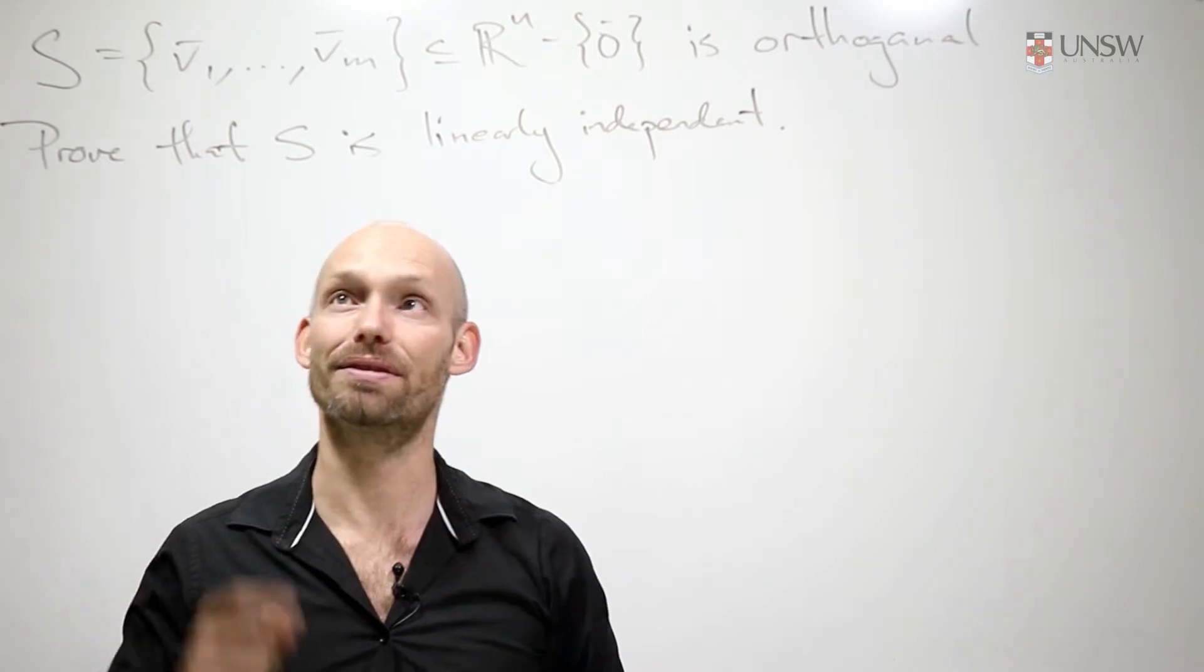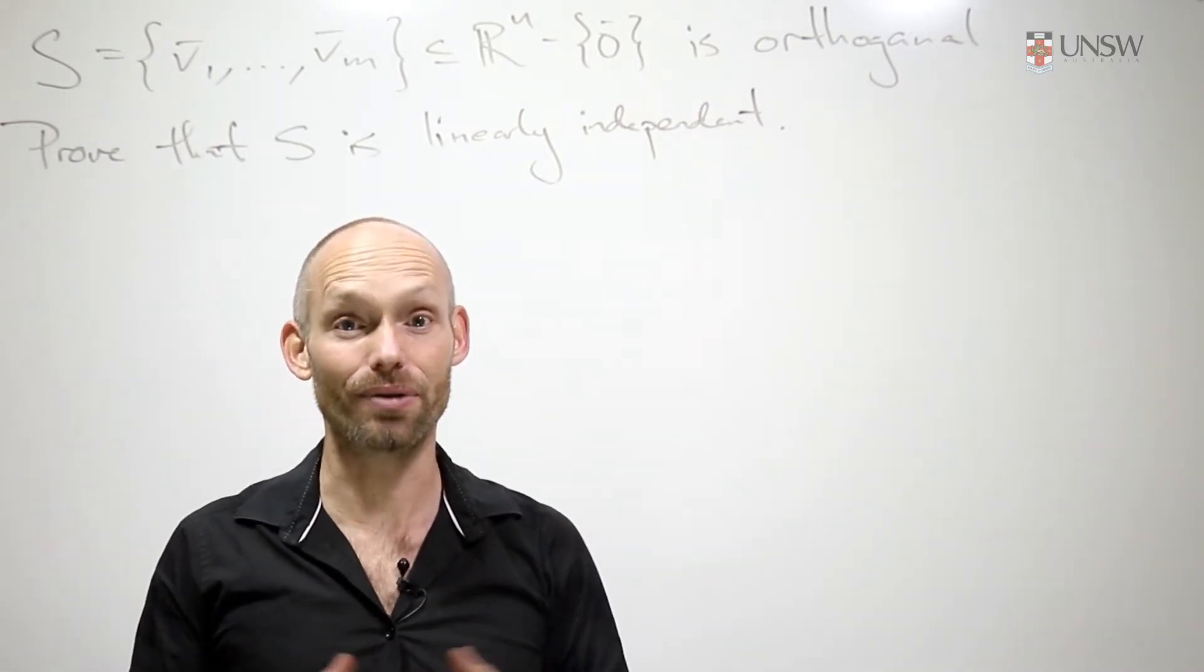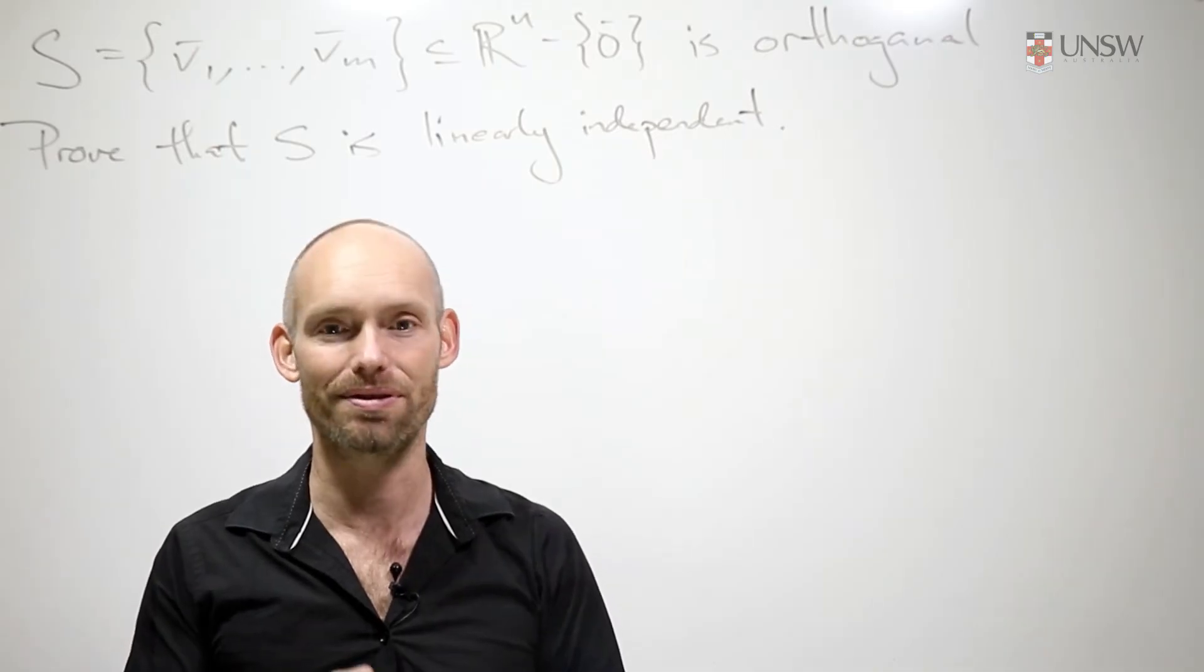And the sense that we're talking about is that if we take the dot product of any two of these, we get zero. So the dot product of any two of these is zero.